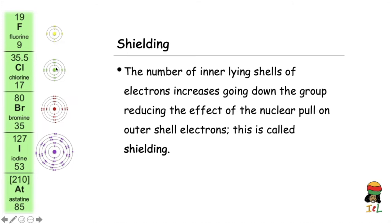Looking at the atomic diagrams, fluorine has two shells of which one is an inner-lying shell. Chlorine has three shells, of which two are inner-lying shells. Bromine has three inner-lying shells. Iodine has four inner-lying shells. And astatine would have had five inner-lying electron shells.